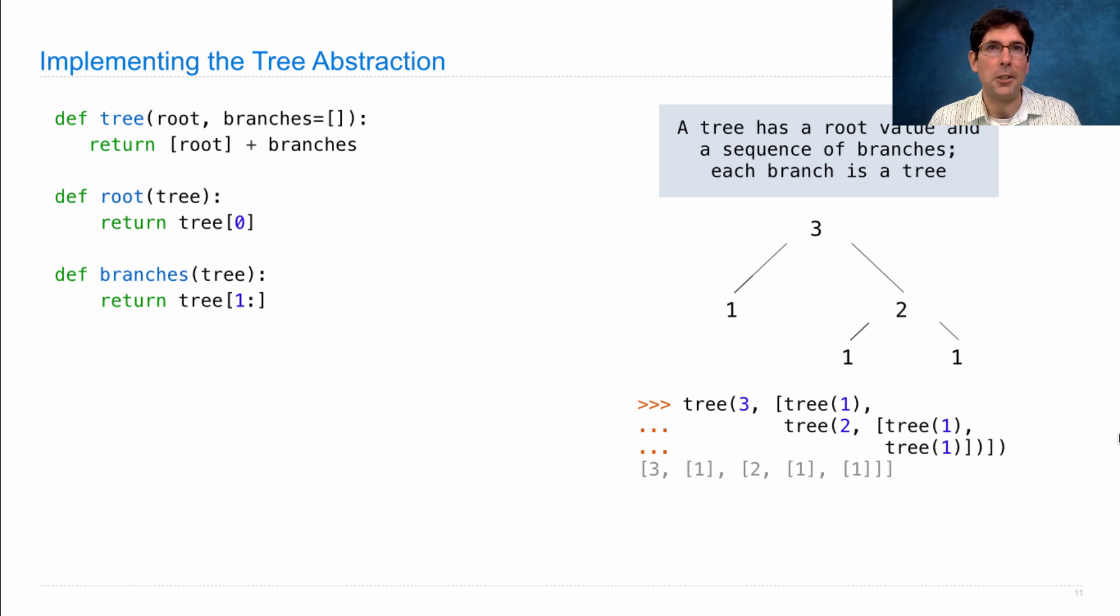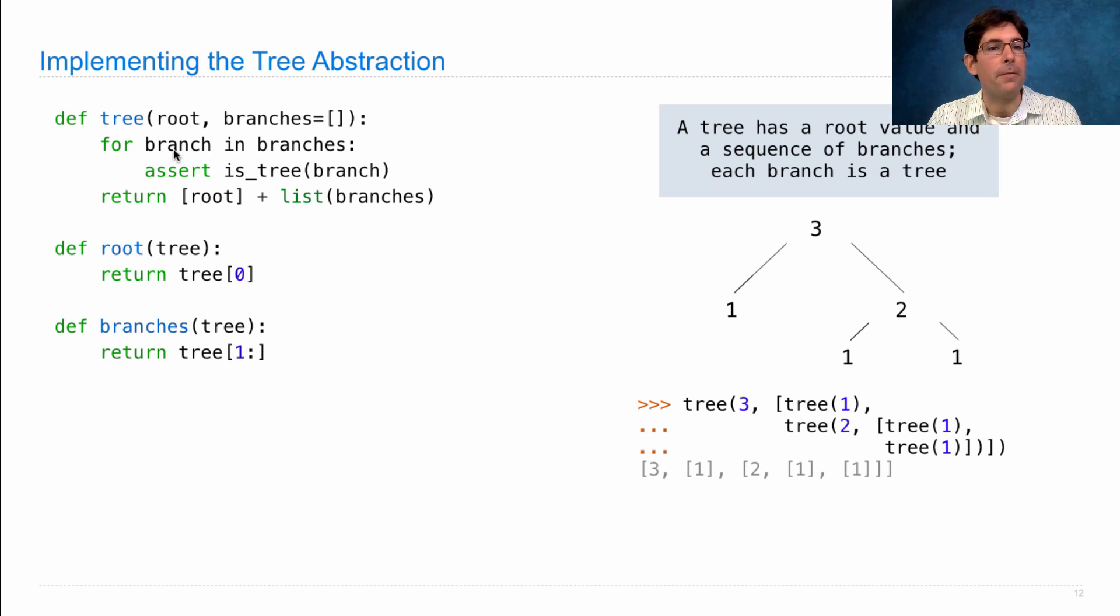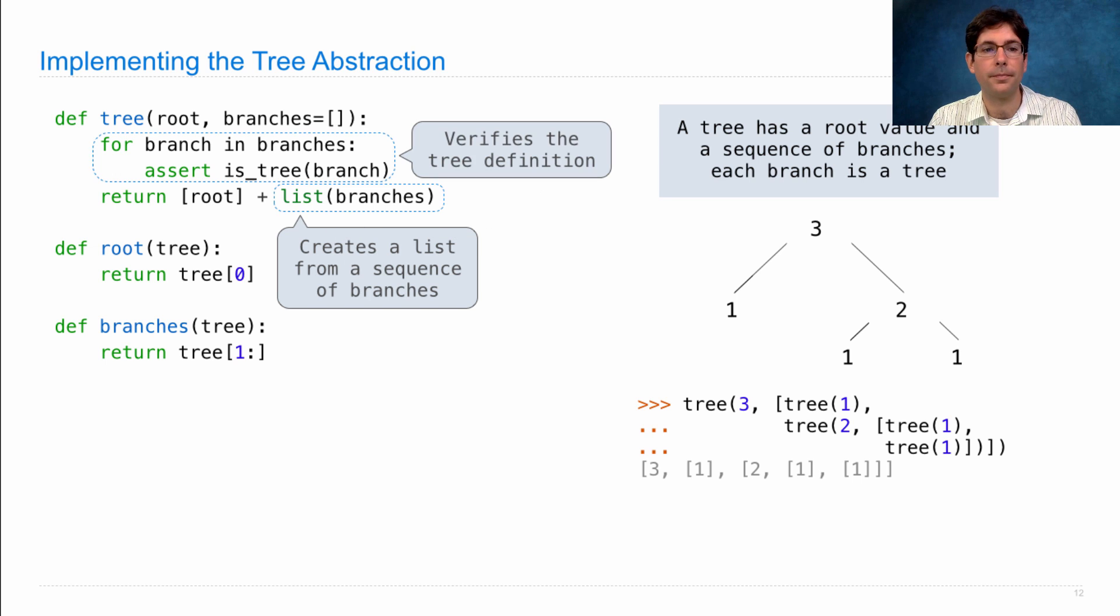Now, we're actually going to add a little bit more code in order to do error checking to make sure that we're building valid trees. So what we'll do is go through every branch in branches and make sure that it's a tree itself. Each branch is a tree. The other change I've made is to call list on branches, so that I can pass in any sequence and I'll make sure that it's a list, which I'll then add to the list containing the root in order to get a list that starts with the root and is followed by all the branches. The whole point of this for statement is not to do anything useful, but just to verify the tree definition.